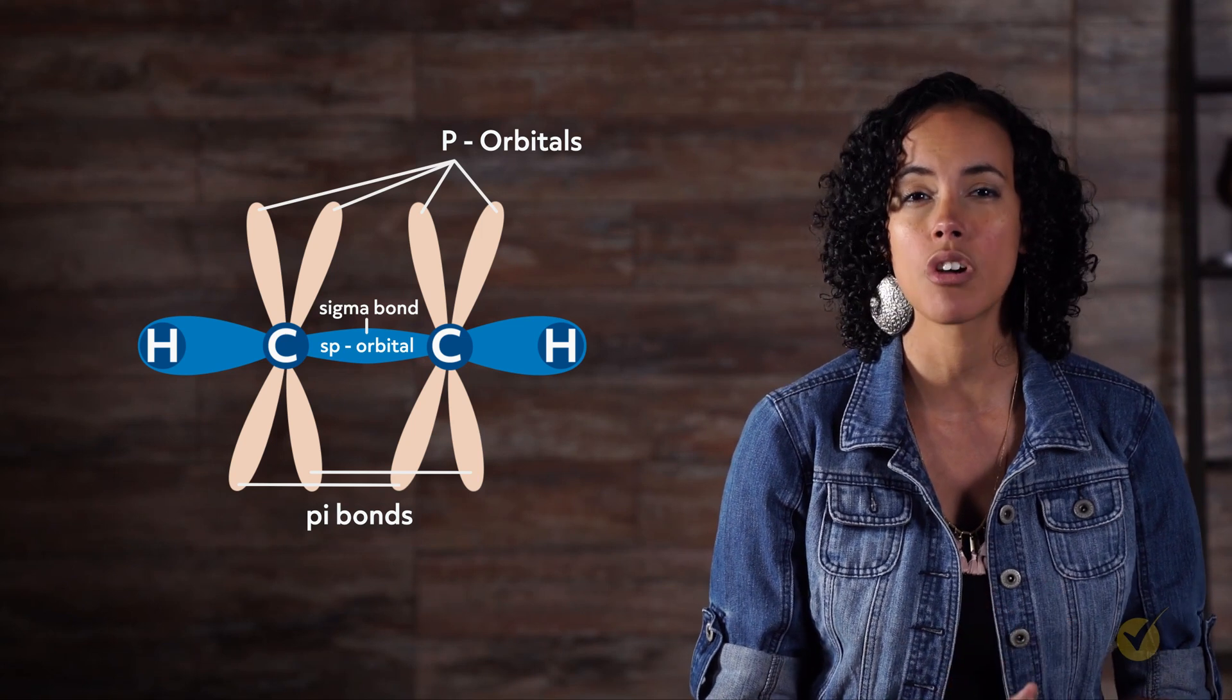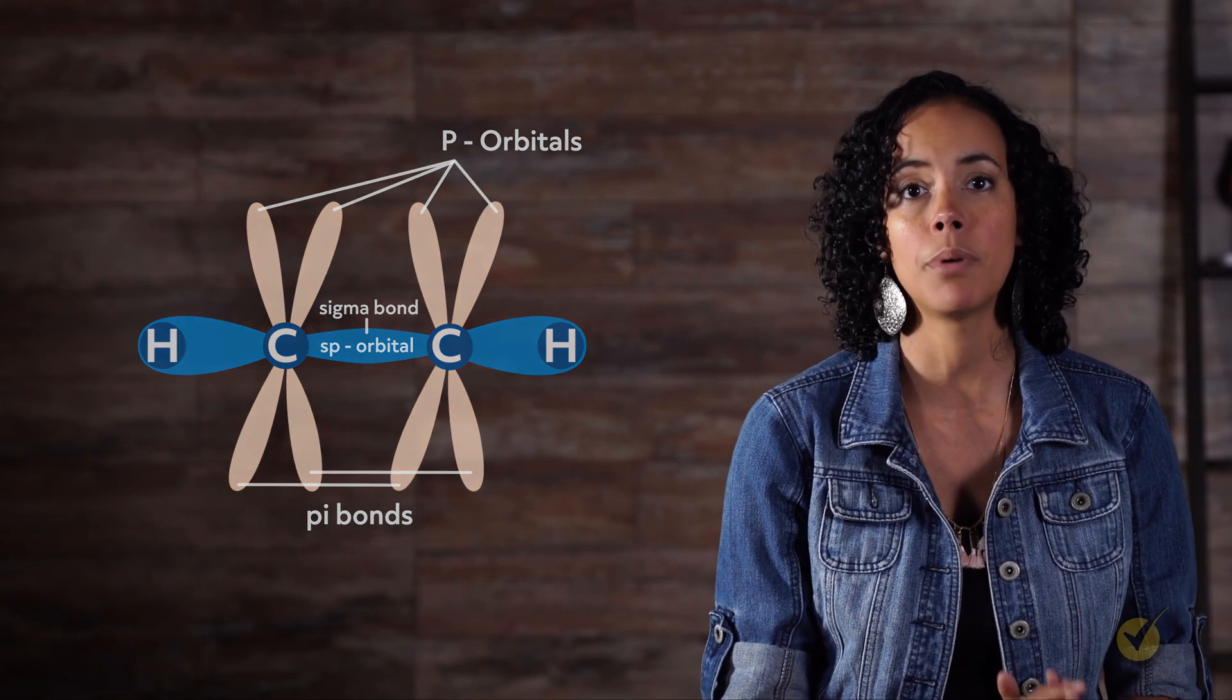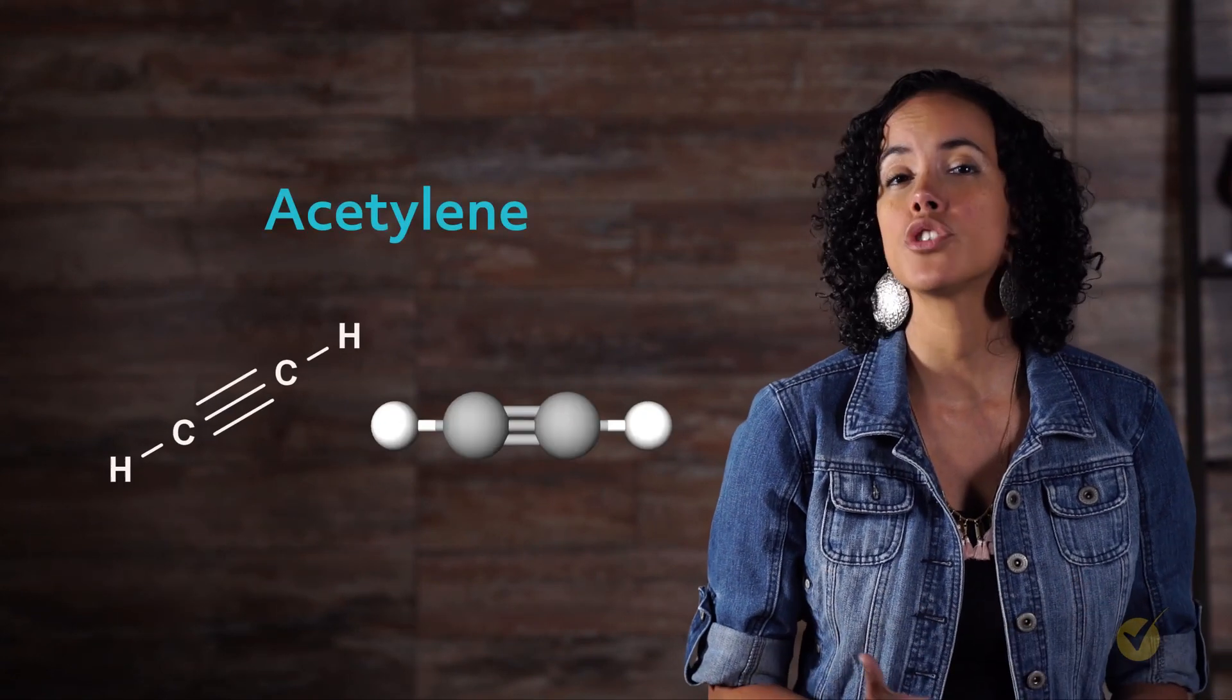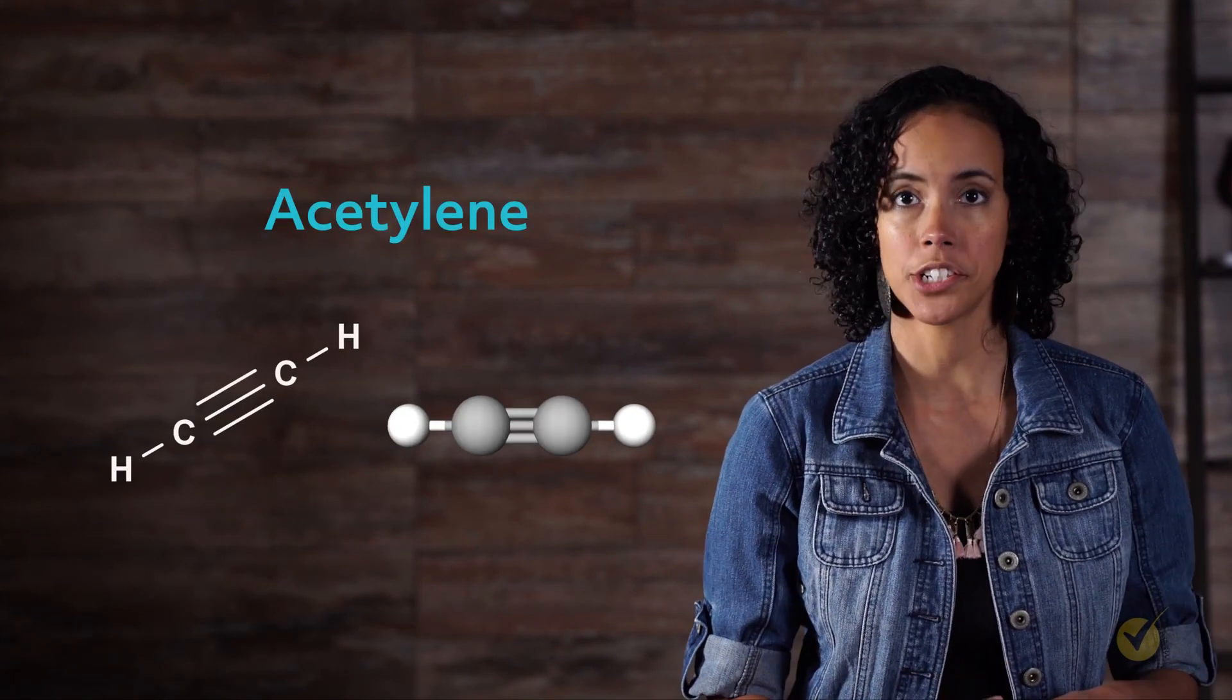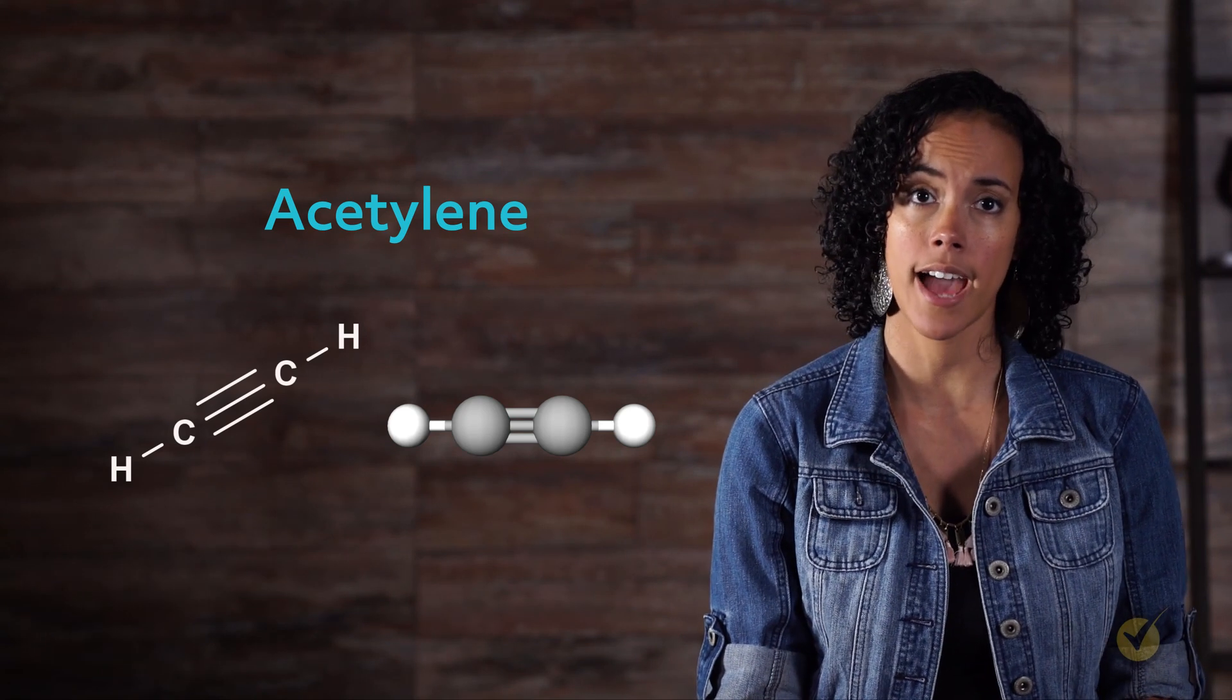The carbon triple bond is even stronger than the carbon double bond, and the bond length is shorter as well. The simplest alkyne is acetylene, which is made of two triple bonded carbons with two hydrogens. It is a highly combustible colorless gas.